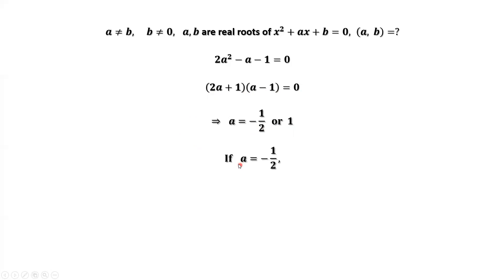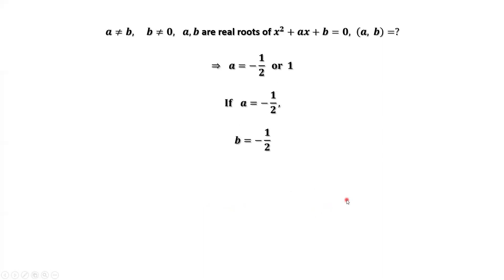If a equals negative one-half, then b equals negative 2a squared — replacing a by negative one-half gives b equals negative one-half. Since a does not equal b, we reject this case because a equals b equals negative one-half.